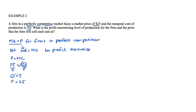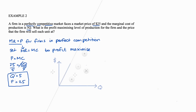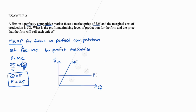Visually, in this case we have an upward sloping marginal cost curve, and the market price is horizontal — that's our marginal revenue line. At their intersection, the quantity is equal to 5 and the price is 25.